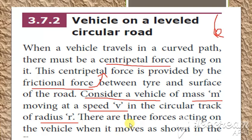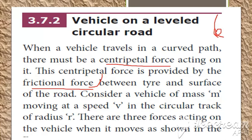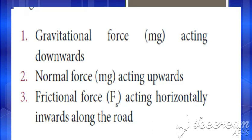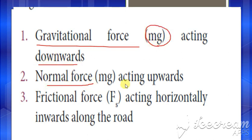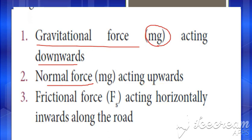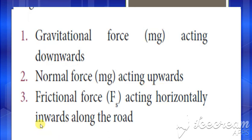There are three forces acting on the vehicle when it is moving in the circular path. What are the forces? First, the gravitational force, given by mg, acting downwards. Second, the normal force acting upwards. Third, the frictional force, given by fs, and that frictional force acts inwards. So these are the three forces.